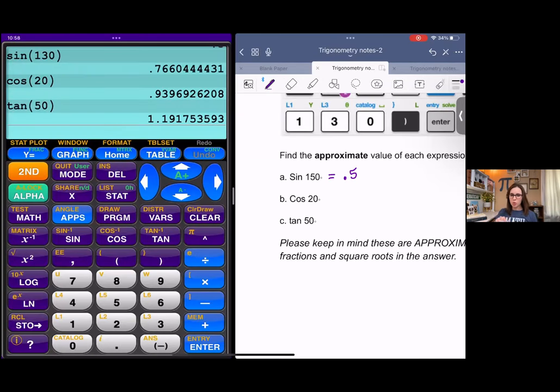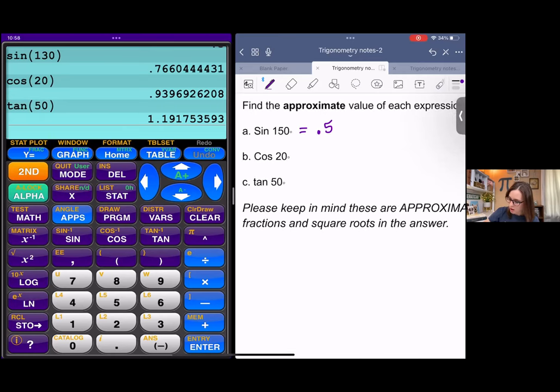So for cosine 20, if we're going to four decimal places, we should get, I'm going to do squiggly, which means approximately. Point, I guess it would be, if I go to four, oh, four, there we go. Nine, three, nine, seven. So that six has a nine behind it. And so I rounded up that six to the next one.